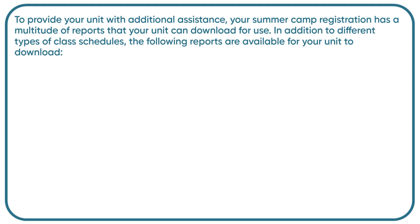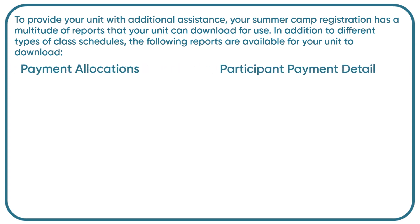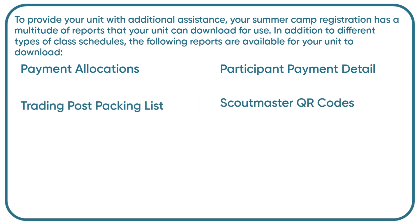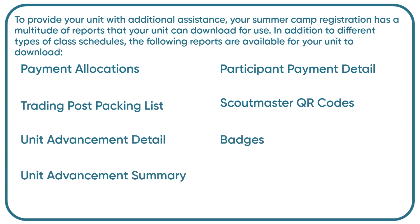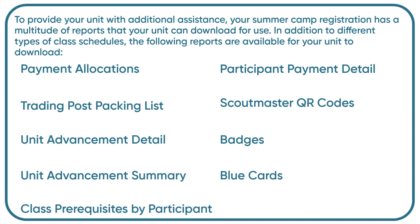To provide your unit with additional assistance, your summer camp registration has a multitude of reports that your unit can download for use. In addition to different types of class schedules, the following reports are available: payment allocations, participant payment detail, trading post packing list, Scoutmaster QR codes, unit advancement detail, badges, unit advancement summary, blue cards, class prerequisites by participant, and customer invoice.